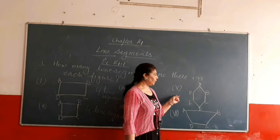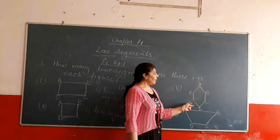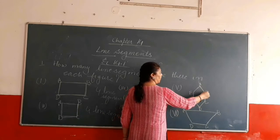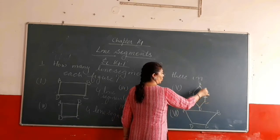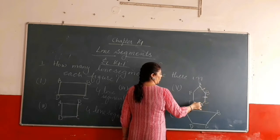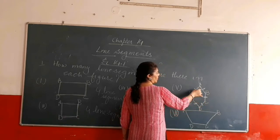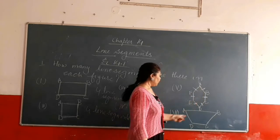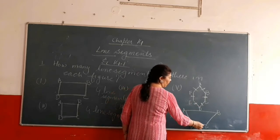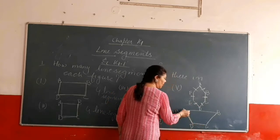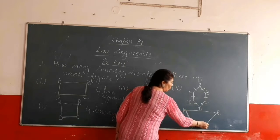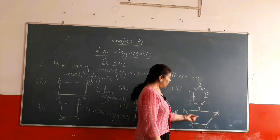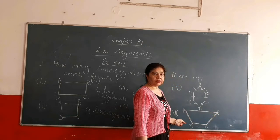In part five, we count: AB is first, then 1, 2, 3, 4, 5, 6 — there are also 6 line segments in this figure. And in the sixth part, counting: 1, 2, 3, and 4 — there are 4 line segments.